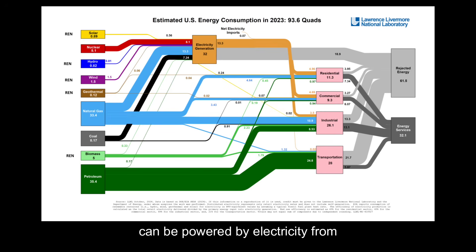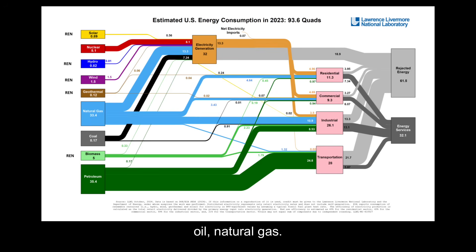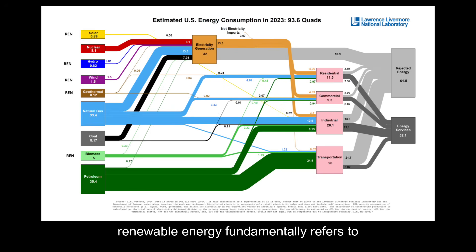can be powered by electricity from renewable sources — solar, wind, etc. — or electricity from non-renewable sources such as coal, oil, and natural gas. In short, renewable energy fundamentally refers to the energy source, not the specific application or end use.